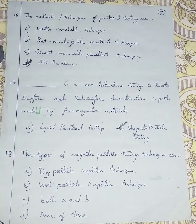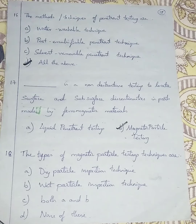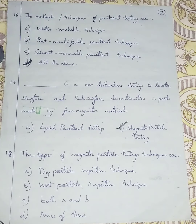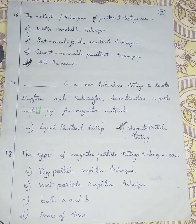If there is any word given as ferromagnetic, for determining discontinuities in surface and subsurface of ferromagnetic materials, only one test is used - that is magnetic particle testing. The word ferromagnetic contains the word magnetism, so we are going with magnetic particle testing. Keep that in mind.